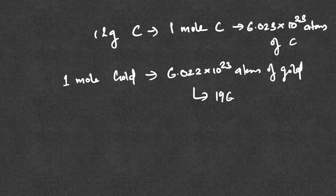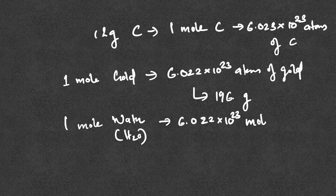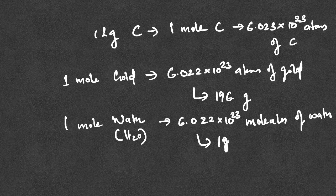The amount is 196-point-something grams. First example: 1 mole of water, H₂O, is equal to 6.022 into 10²³ water molecules. Water is a molecule. The molar mass of water is 18 grams.